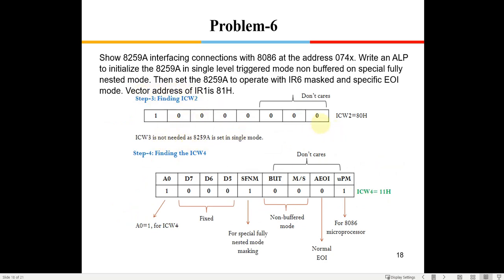ICW2 provides the vector address. The question states IR1's vector is 81h, so IR0's vector address is 80h. ICW2 = 80h. The A0 bit for ICW2 must be 1, so the address is 0742h. Since this is single mode (not cascaded), ICW3 is not applicable and we skip directly to ICW4.